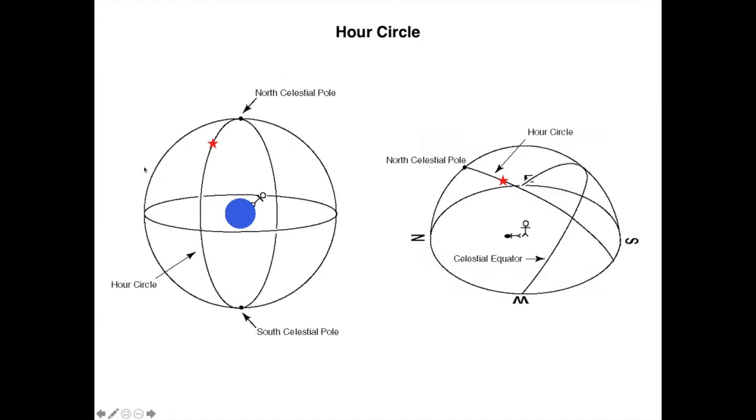For the hour coordinate system we will need the definition of an hour circle. An hour circle is a great circle that is going from the celestial poles, from the north celestial pole to the south celestial pole and passing by the star. So the hour circle is the great circle where all the stars have the same right ascension.